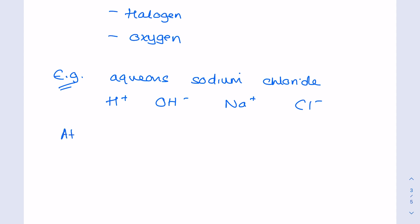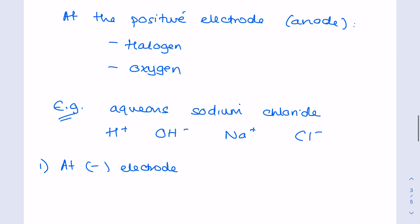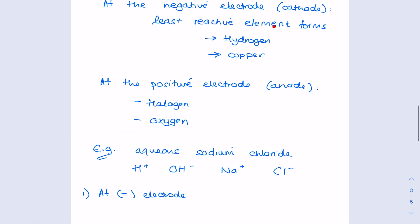First of all, we know we're picking between these two ions because opposites attract. Remember to include that in your explanation if they ask why it discharges. And according to our rules, we're looking for the least reactive element. Sodium is a group one metal. It's extremely reactive. So, that's why it's hydrogen.